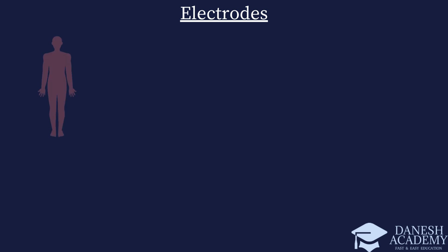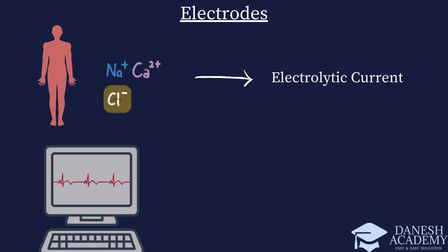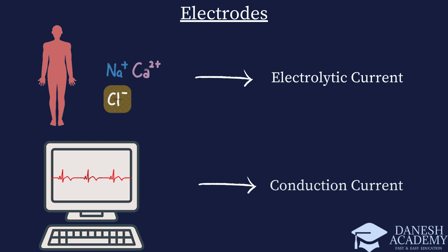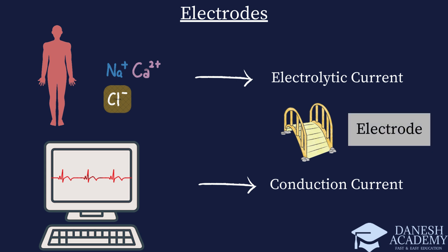Electrical conduction in the human body occurs through the movement of ions, meaning that the electrical currents in the human body are electrolytic currents. This is in contrast to the conduction currents used in electronic devices. To bridge the gap between the electrolytic currents in the body and the conduction currents in electronic devices, we need a converter — and electrodes are the answer. Electrodes serve as the interface, facilitating the conversion of one type of current to the other, enabling effective measurement and display of biosignals.